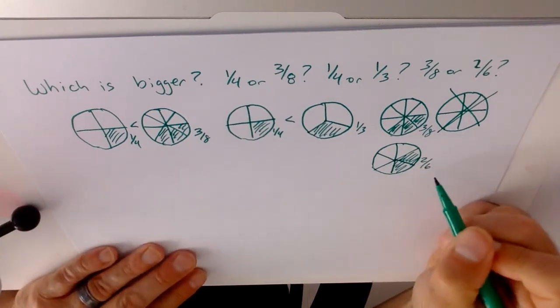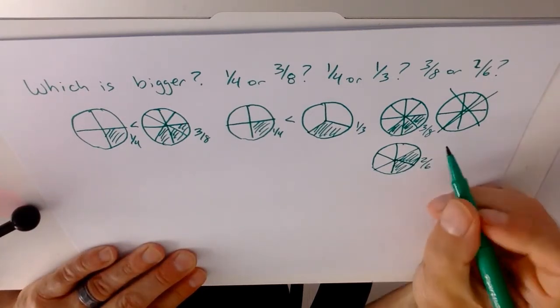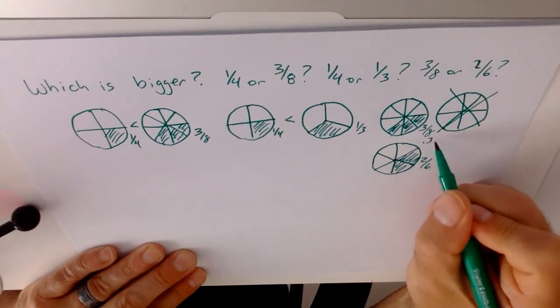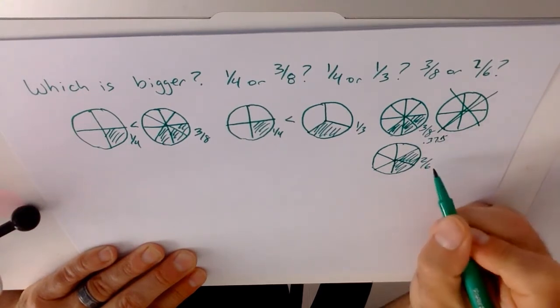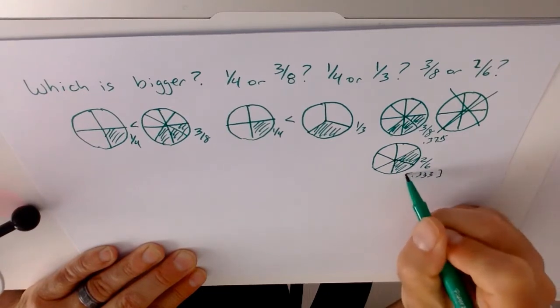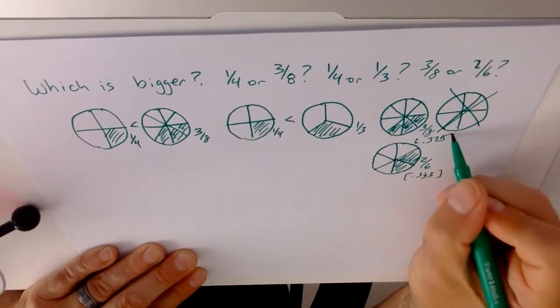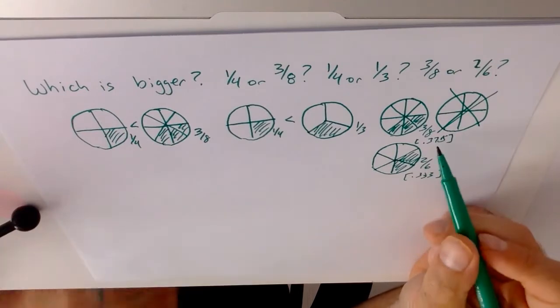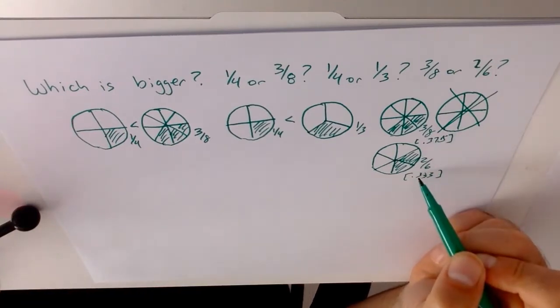And it's really hard to see because when you're talking about decimals, this is actually 0.375, and this is 0.333. And those numbers are pretty close together. But we can still see that 3 eighths is bigger than 0.333.